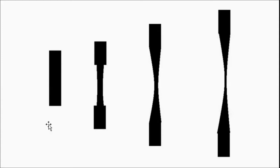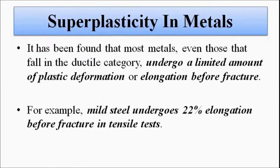So super plasticity is enhancing the ductile behavior of certain metals by operating them at temperatures more than 50 percent of their melting point and at a slow loading rate, so that they undergo more and more elongation. This is the concept of super plasticity in metals. Please subscribe to Engineering Tutorial for more such videos related to engineering, science, and technology. Have a great day, thank you very much.